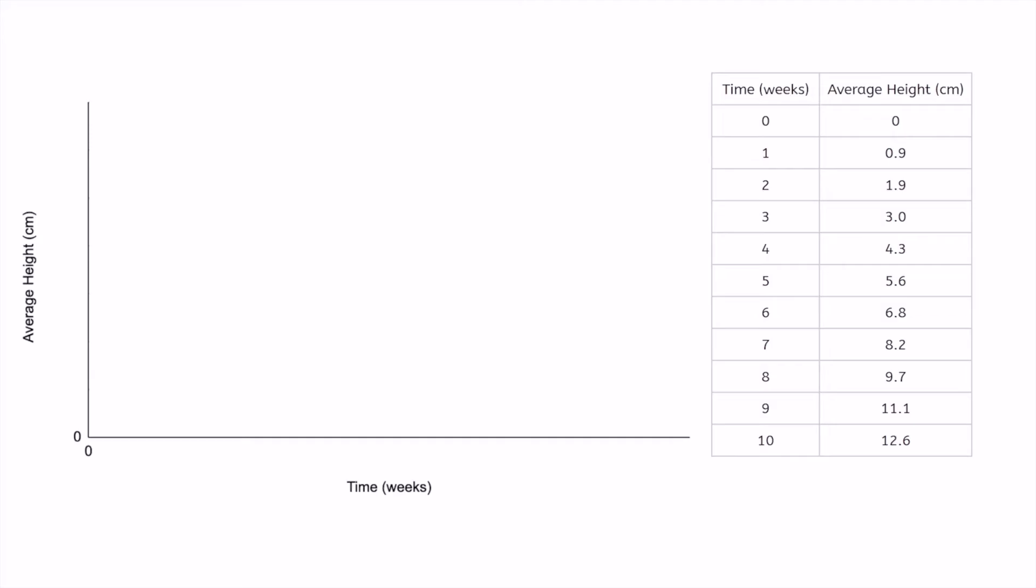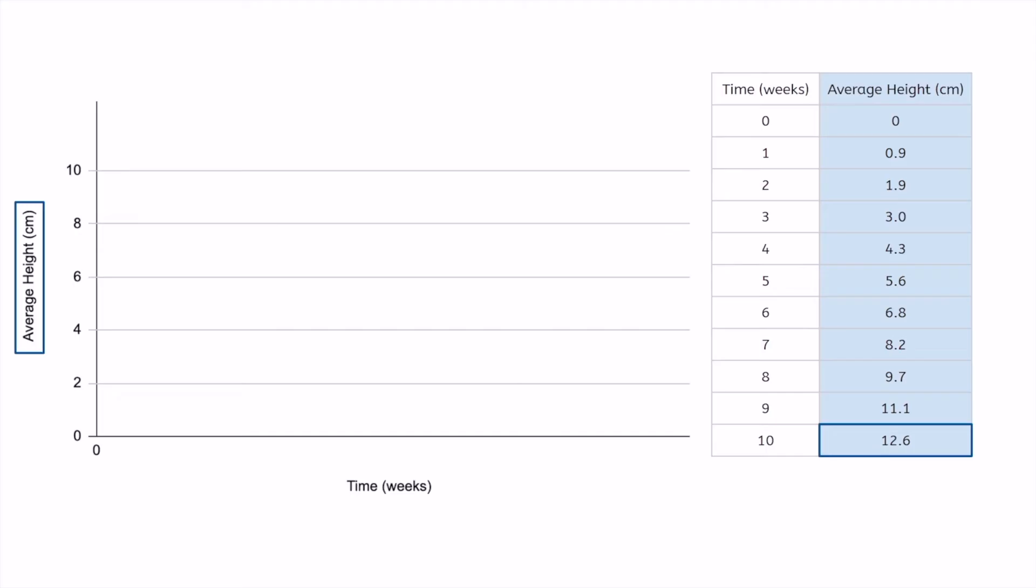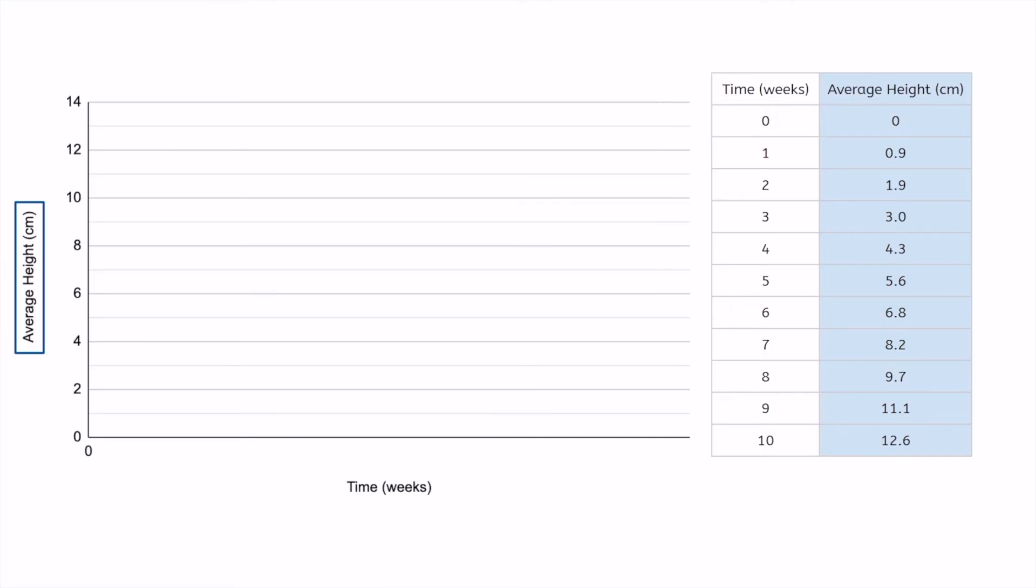All right, our axes are now titled, but they're still missing something. Numbers. The number scales we use will have a big impact on how our graph looks, so we need to choose them carefully. Let's start with the y-axis. Based on the data, what numbers should we use to label the y-axis? Maybe 0 through 20? Well, the highest number in our data set is 12.6, so that means we'd have a ton of empty space at the top of the scale that goes all the way to 20. We can't do 0 to 10 because it wouldn't fit all of our data points. Let's go with 0 to 14. That should work nicely.